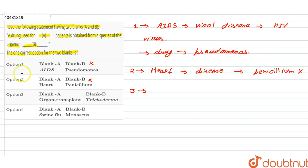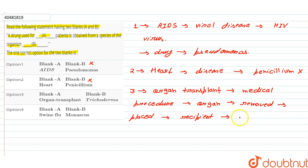The third option is drug used for organ transplant. Organ transplant is a medical procedure where we remove an organ from one body and replace it in the recipient body.